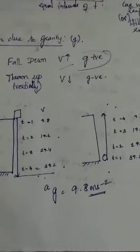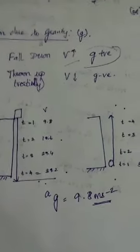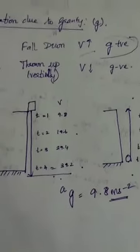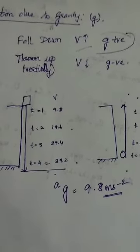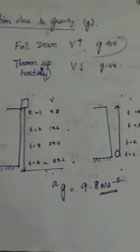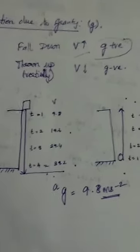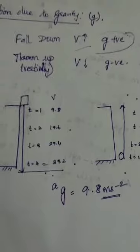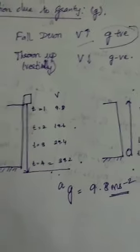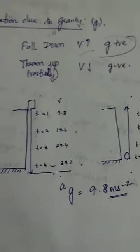Every planet has its own atmosphere and therefore its own acceleration due to gravity. For example, Jupiter, which is much more massive, has its own atmosphere and its own value of g. Try to recall all these topics: scalar and vector, distance and displacement, speed and velocity, acceleration, uniform and variable acceleration, and acceleration due to gravity. This is very important — gravitational force will be involved in your upcoming lessons. The next video will be on numericals.